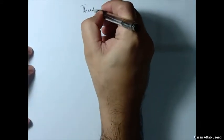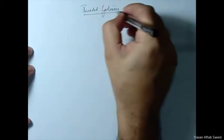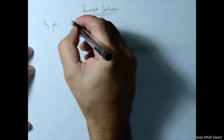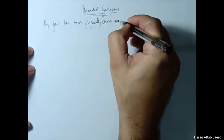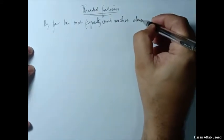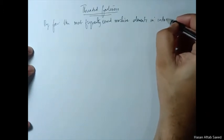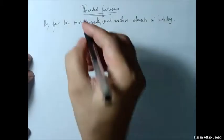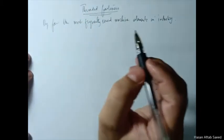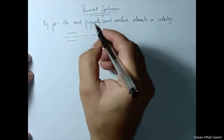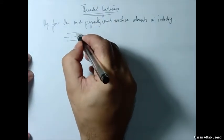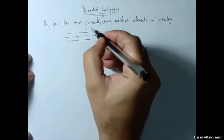Our topic today is threaded fasteners, and these are by far the most frequently used machine element in industry. Whatever the specific kind of fastener it may be, one thing will be common, and that will be a threaded portion. That threaded portion will take this form — I'm just going to draw it in a symbolic manner.